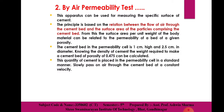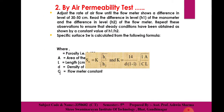Knowing the density of cement, the weight required to make a cement bed of porosity 0.475 can be calculated — this is the standard weight. This quantity of cement is placed in the permissibility cell and air is slowly pressed through the cement at a constant velocity. Adjust the rate of airflow until the flow meter shows a differential level of 30 to 50 centimeters.